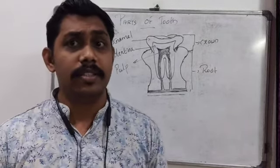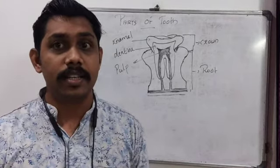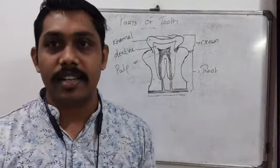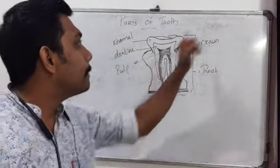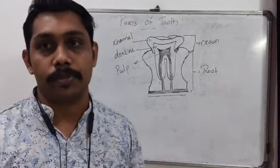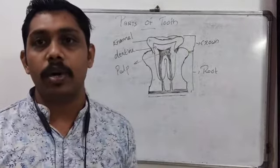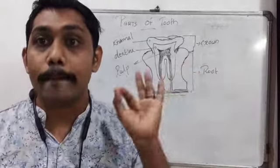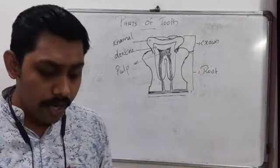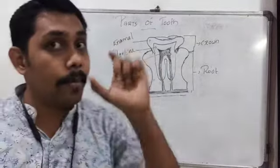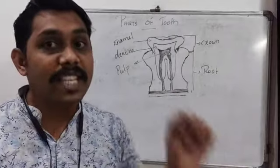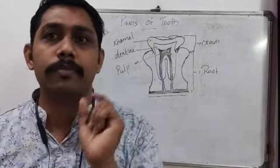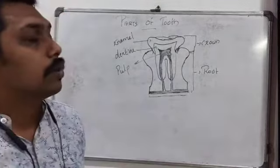Let's see how our teeth look. Our teeth are white in color. These are the main parts of the tooth. The first part is called the crown — that is the visible part of the tooth in our mouth. The part which we can see with our eyes, the white part, is called the crown.